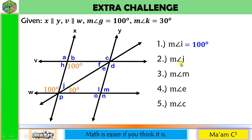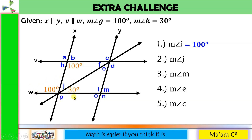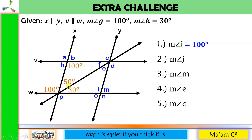Next: measurement of angle J. Here is angle J. This is a straight line and a straight line creates 180 degrees. So 180 degrees minus 100 is 80, minus 30 is 50. Therefore, this remaining angle is 50 degrees. So angle J measures 50 degrees.